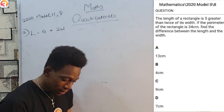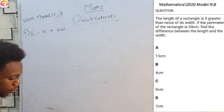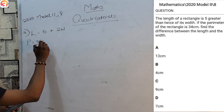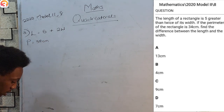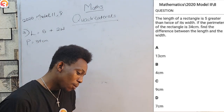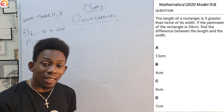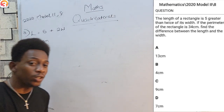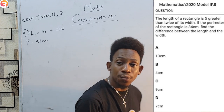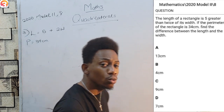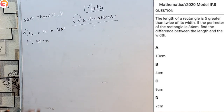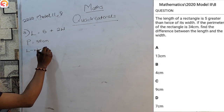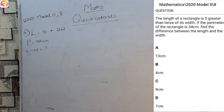Next it says: if the perimeter of the rectangle is 34 cm, find the difference between the length and the width. Be careful — they don't ask you to find the length or find the width; they ask for the difference. In mathematics, difference means subtract, so we want to find L minus W.